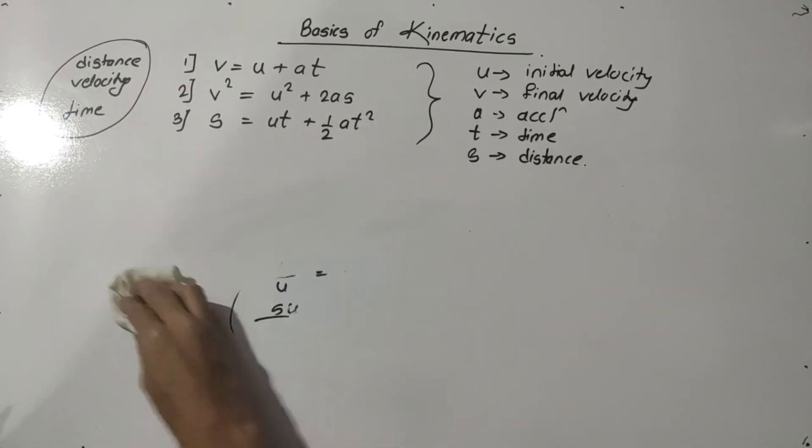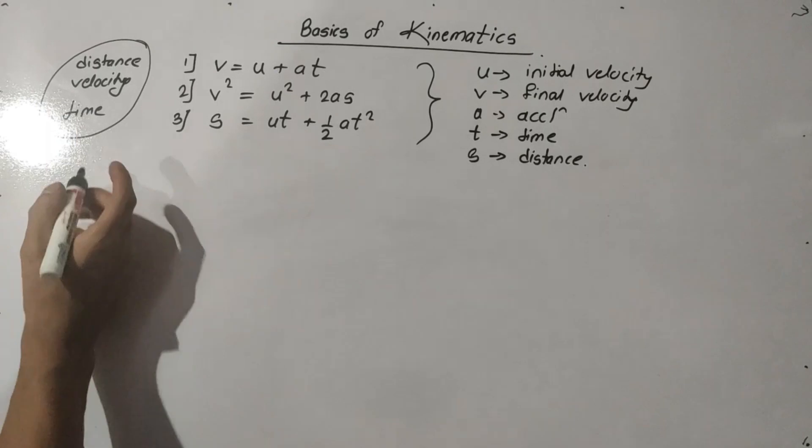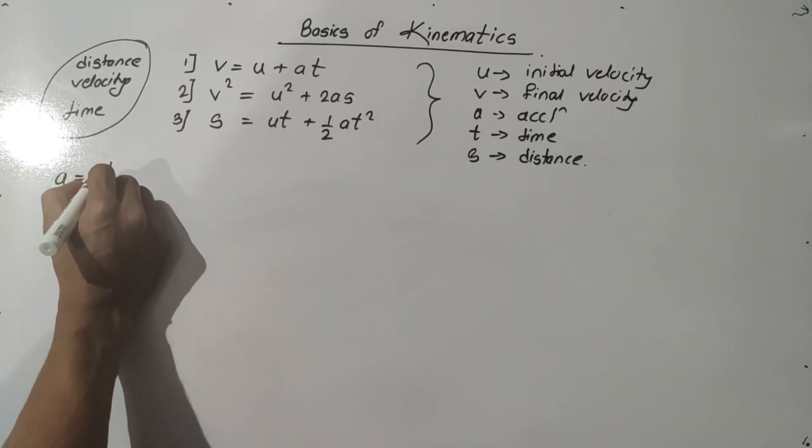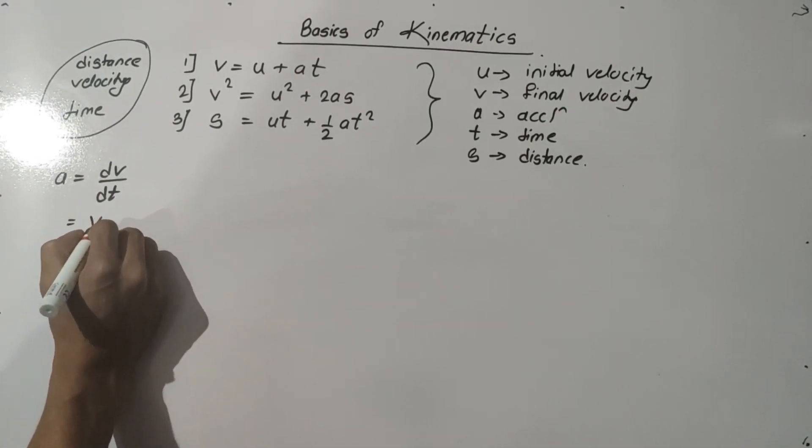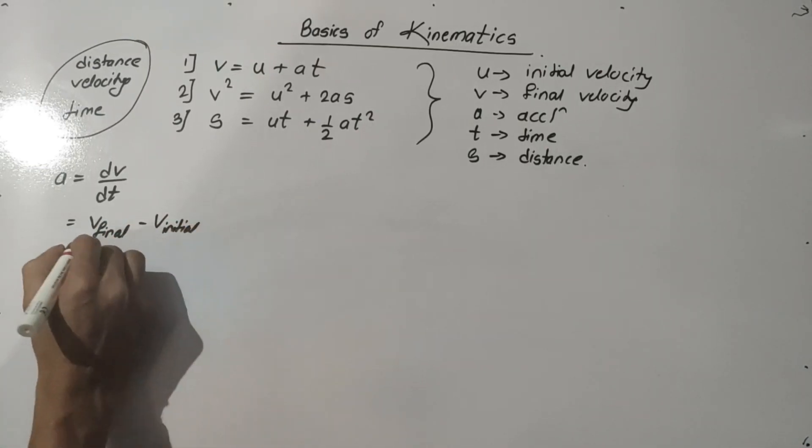Everyone knows that acceleration is the rate of change of velocity - that is, acceleration is dV by dt, equals V final minus V initial upon time.